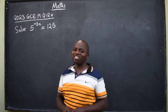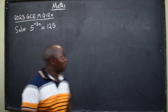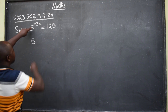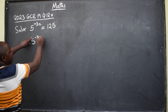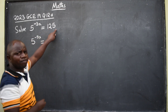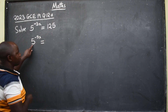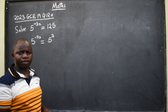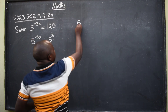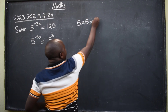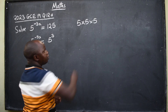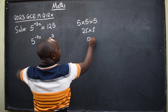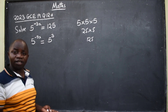Very simple. So this 5 you copy the way it is: 5 to the power negative 3x, is equal to 125 with a base of 5 — it will be 5 to the power 3. Because that will be 5 times 5 times 5, which is 25 times 5, and this gives 125. You see that?